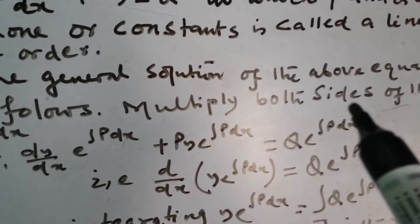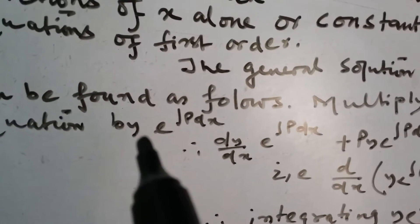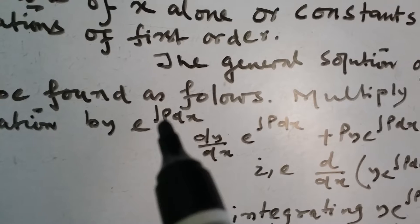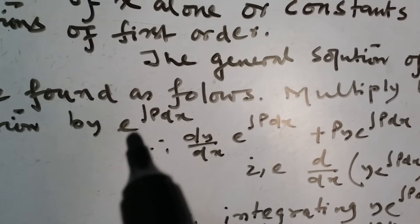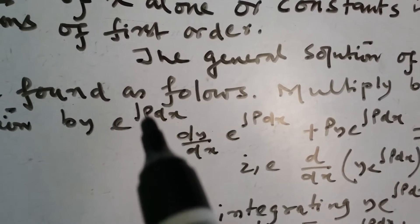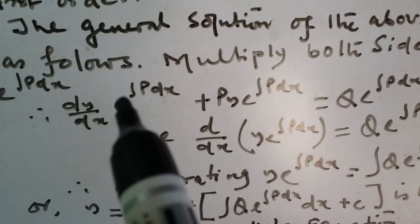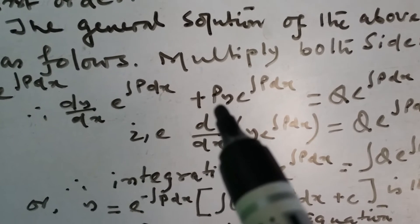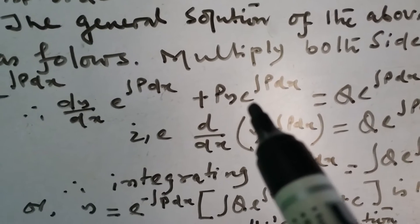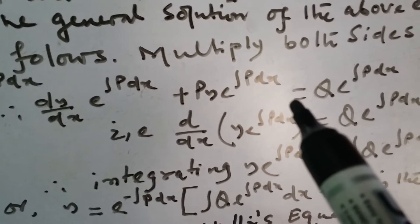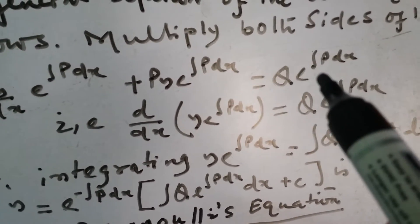Multiply both sides of the equation by e to the power of the integral of p dx — this is the integrating factor, e to the power of the integral of p dx. So we get: dy/dx times e^(∫p dx) plus py times e^(∫p dx) plus q times e^(∫p dx).